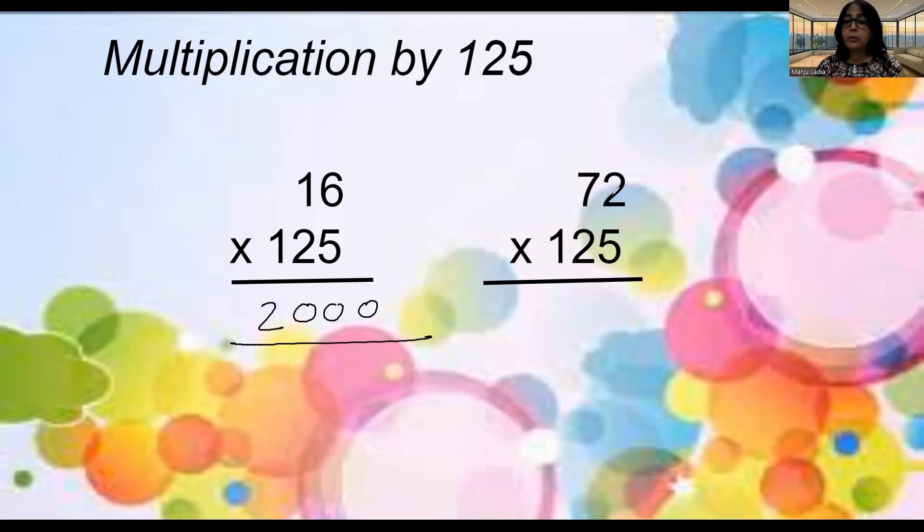72 divided by 8 is 9. So write 9 here. Add three 0's. Simple. Easy. You don't have to follow 3 steps, 4 steps as like in the conventional math. You will find the answer in one line. You can find the answer in one line. Now let's see some more examples.